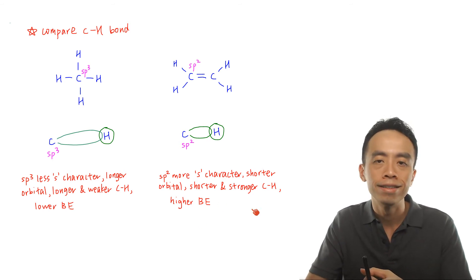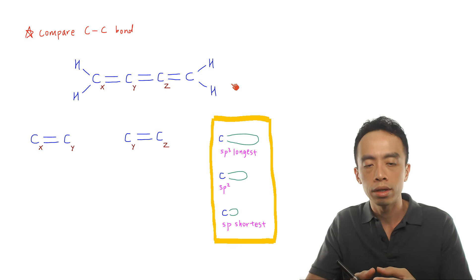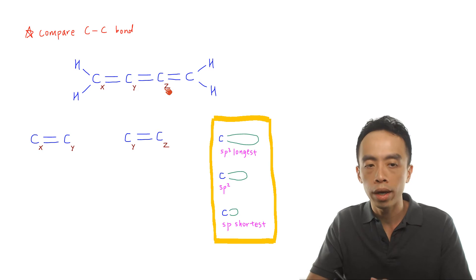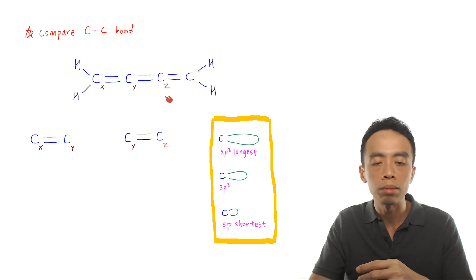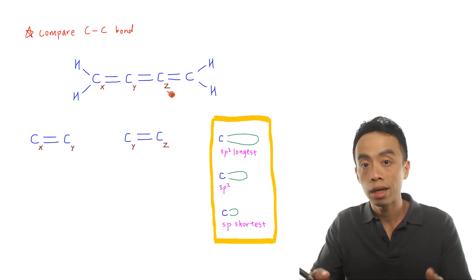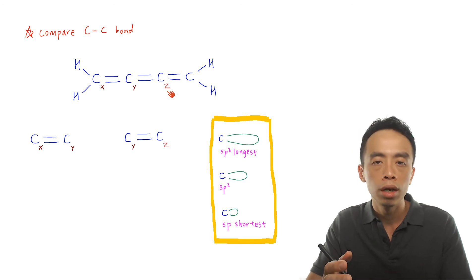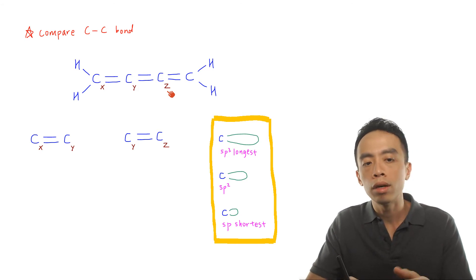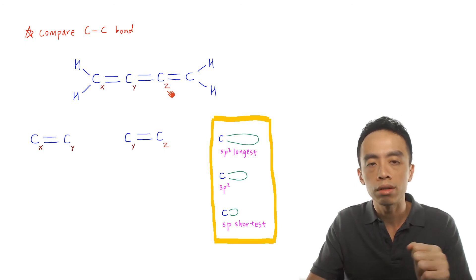In addition to comparing CH bonds, we can also compare carbon-carbon bonds. Consider a compound with three carbons: Cx, Cy, and Cz. We want to compare two bond energies: the double bond between Cx and Cy, and the double bond between Cy and Cz. Again, comparing carbon-carbon double bond versus carbon-carbon double bond, there's no information in the data booklet to differentiate which is more stable, so we need to look at the state of hybridization of each carbon.